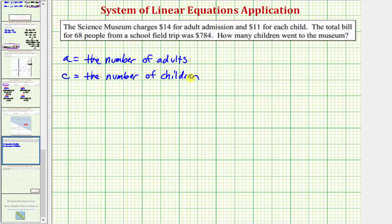Now we'll set up our equations from the given information. The museum charges $14 for each adult admission and $11 for each child, and the total cost was $784. Our first equation will be our cost equation. Because each adult costs $14, the cost for all the adults would be 14 times A, where A is the number of adults.